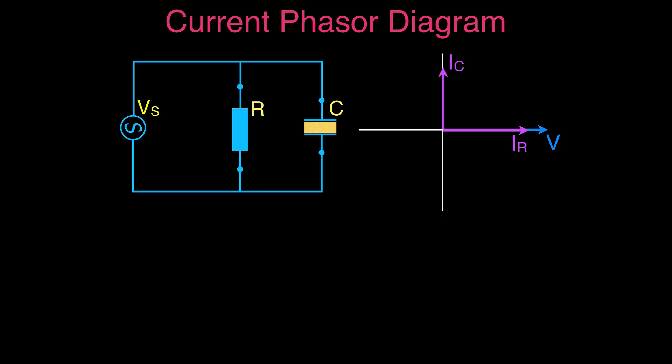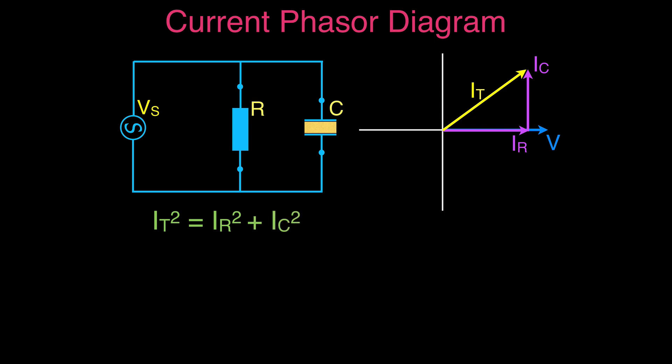Because we have an alternating source and the current is changing over time, we add these two up vectorially, making a right triangle. We can slide the current for the capacitor over to complete that right triangle — the hypotenuse equals the total current through the circuit, and this gives us the phase angle. Using the Pythagorean theorem: total current squared equals the resistor current squared plus the capacitor current squared, so total current equals the square root of the sum of those two squared values.